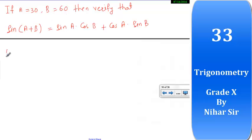So let's start. LHS equals sin(A + B). Now sin bracket, A ki jagah hum likh denge 30, B ki jagah hum likh denge 60.